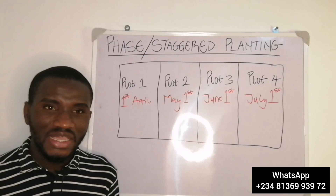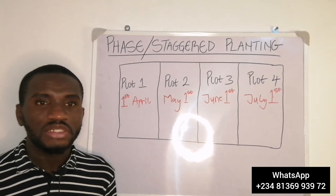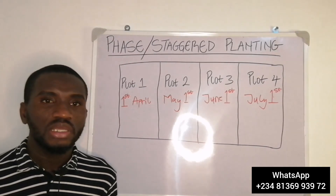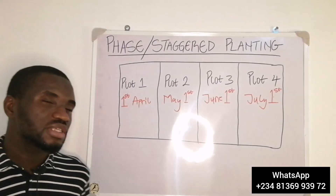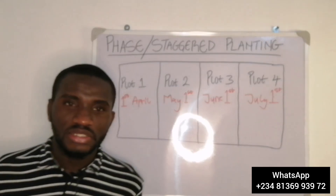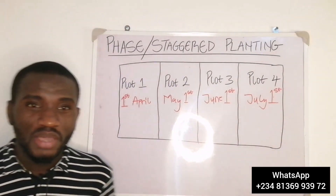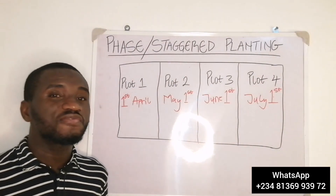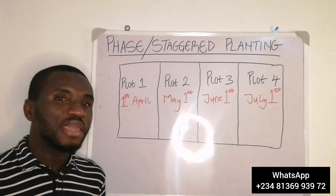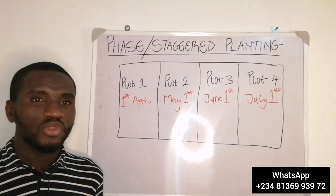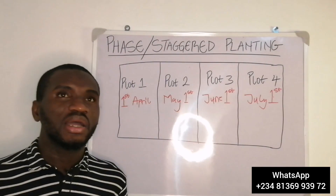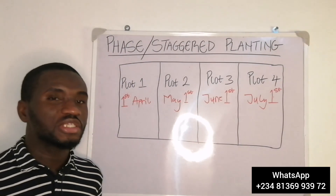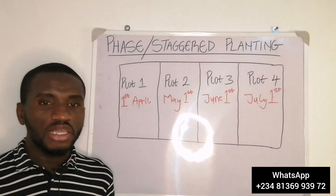What is staggered or fish planting and how is it being practiced? As the name implies, fish planting is a concept whereby you do your planting in phases with some time interval between them. That is basically what fish planting or staggered planting is.